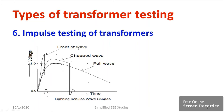We need to generate different types of impulse waveforms, for example front of wave, chopped wave, and full wave. By adjusting the wave front and wave tail resistance, you can generate these waveforms to test the transformer insulation. During lightning and thundering, these kinds of waveforms are generated. The voltage versus time graph shows different impulse wave shapes — if you observe the wave front time and wave tail time, they will be different for each type.